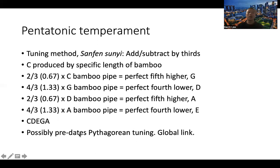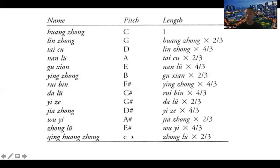The sanfen sunyi method possibly predates Pythagorean tuning, and this is a little piece of global music history. This is a chart showing the 12 semitones, the Chinese names for each pitch, and the derivation of each pitch using the sanfen sunyi method with the alternation between two-thirds and four-thirds.